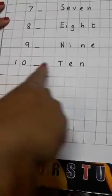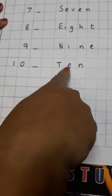Again leave a line. Write number 10. 10 will be in 2 squared. Then give a dash, write the spelling of 10, T-E-N 10.